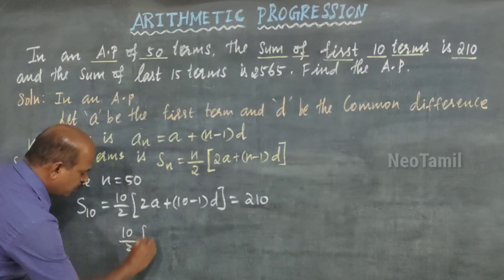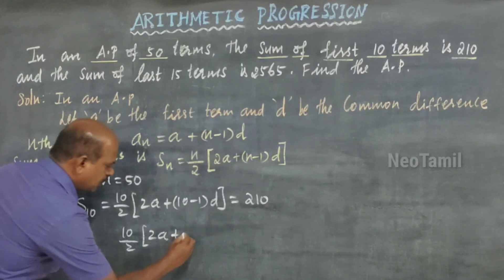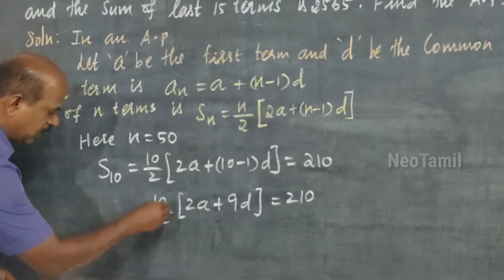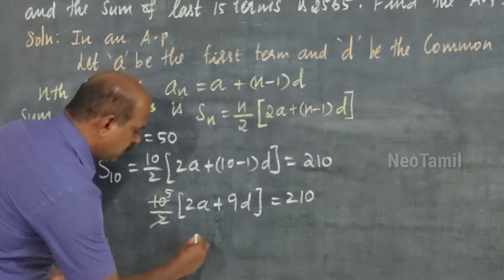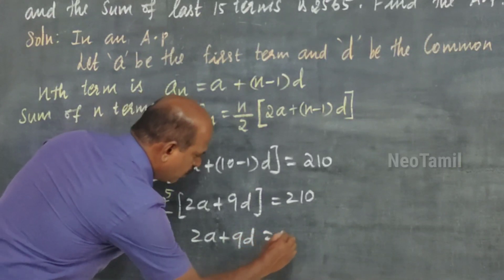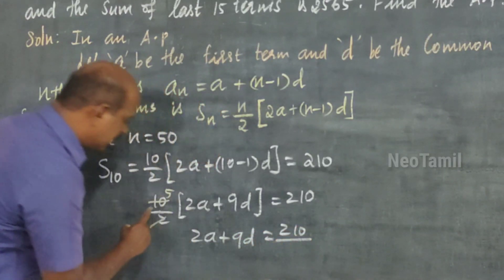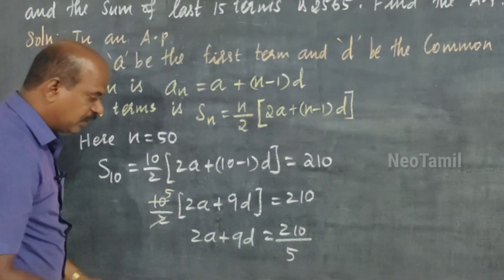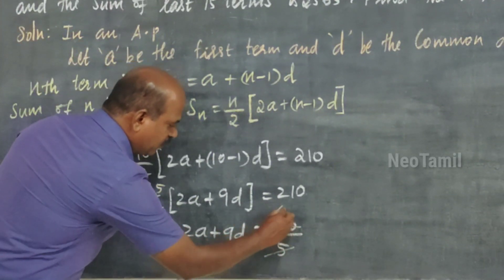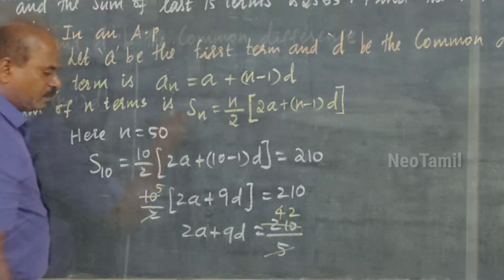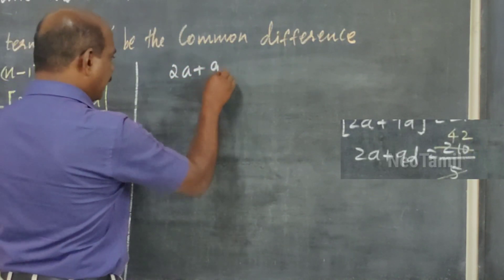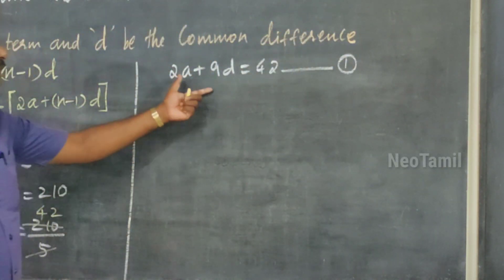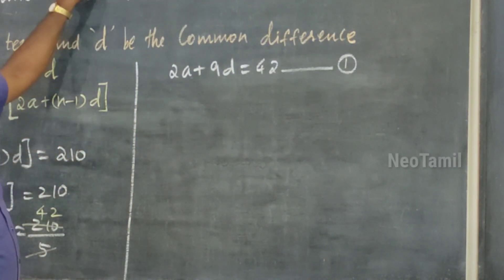Simplifying: 10/2 gives 5, so 5(2a + 9d) = 210. Dividing both sides by 5: 2a + 9d = 42. This is equation number 1, derived from the first condition of the question.